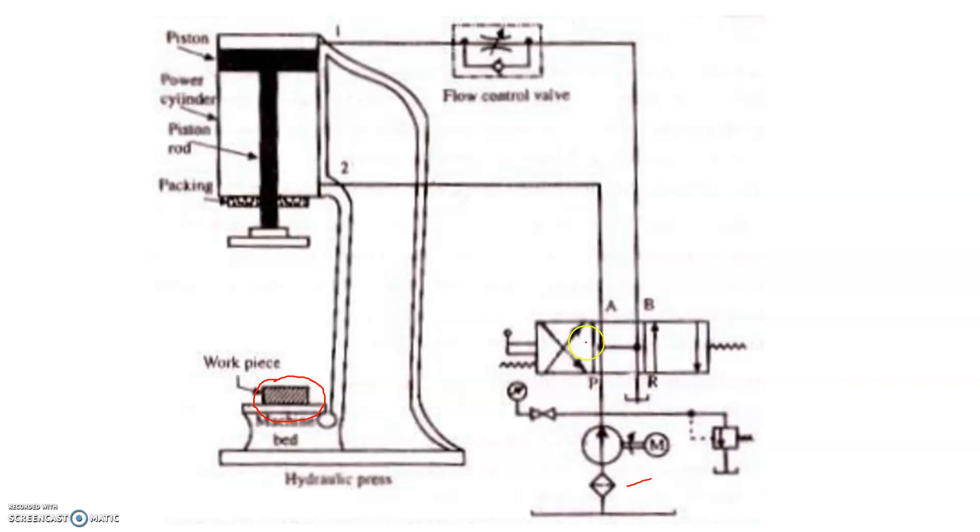Here, it will be having 3 by 4 direction control valve by means of manual operator as well as the pilot operator direction. For example, here port A is pumping and then it will be goes through by means of port 2. What will be happening? The piston will be moved.